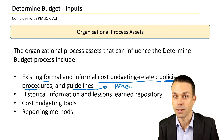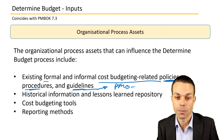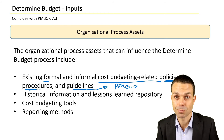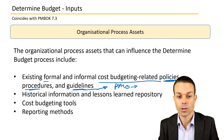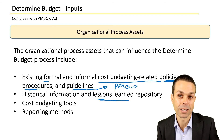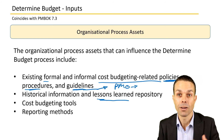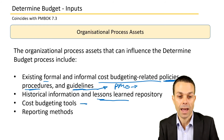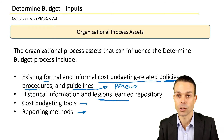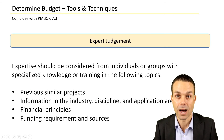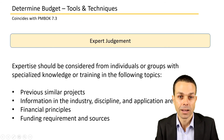Organizational process assets include formal and informal cost budgeting-related policies, procedures, and guidelines within the organization you're working in. These may come from the project management office, the functional management area, or you may need to create your own templates. Historical information and lessons learned regarding budgeting are very important to know, as are cost budgeting tools and reporting methods that are in place for reporting on budgets and benefits.